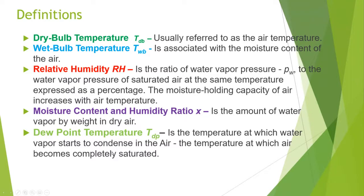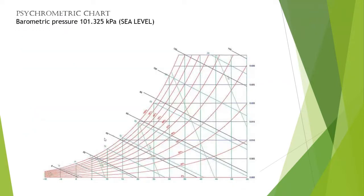Dew point is critically important for instrument mechanics because we do not want water condensing out of instrument air in a supply system that provides air to control valves. When that happens, valves stop working — and a valve failing in a bad position is a serious problem. The psychrometric chart is based on a specific pressure, generally one atmosphere or 101.325 kPa, and contains many different lines.